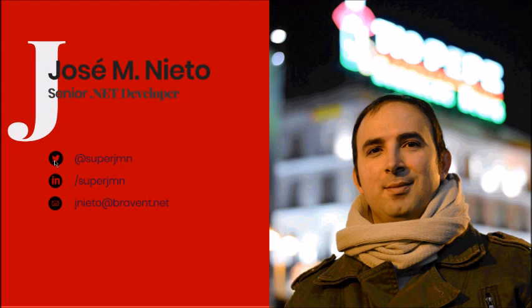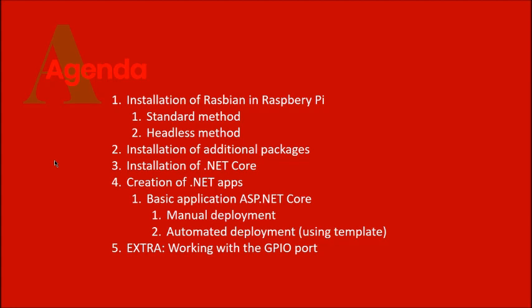This is me — it's the typical first slide of every webinar. You can contact me on Twitter, LinkedIn, and my professional email. This is the agenda. The very first point is the installation of Raspbian, a Linux distro for the ARM 32 architecture that runs on this little device.